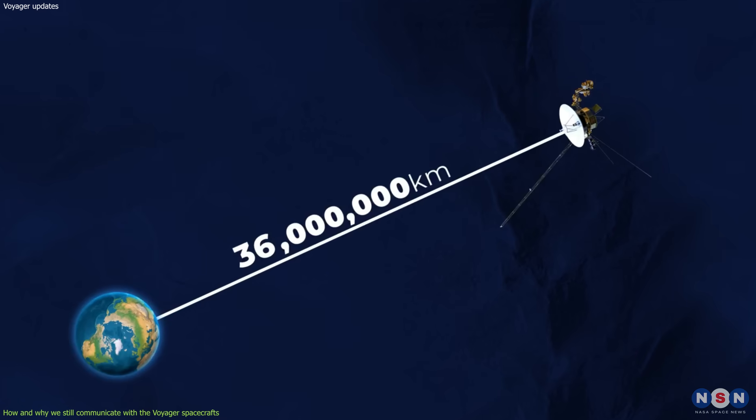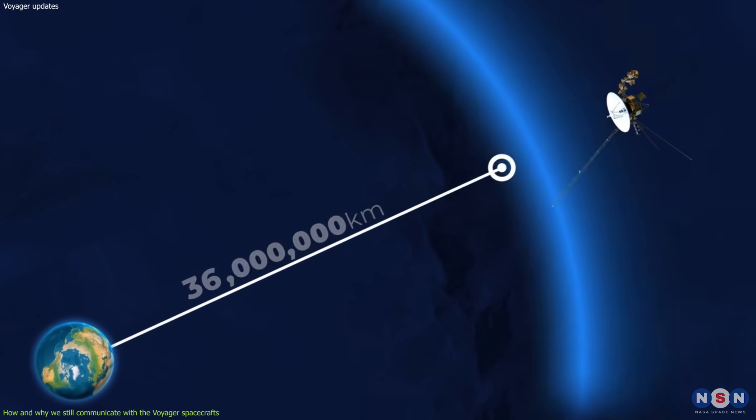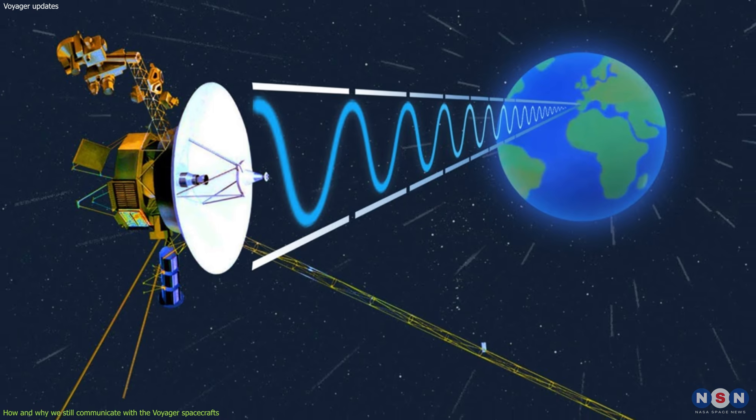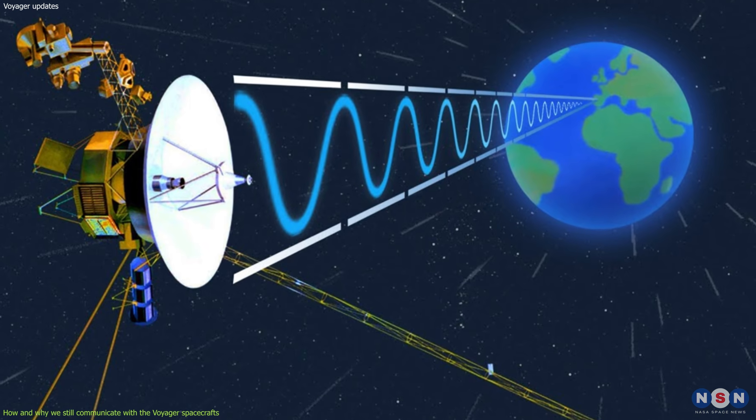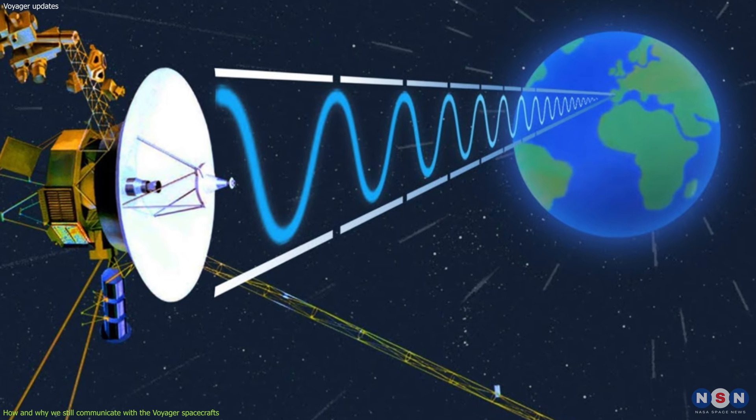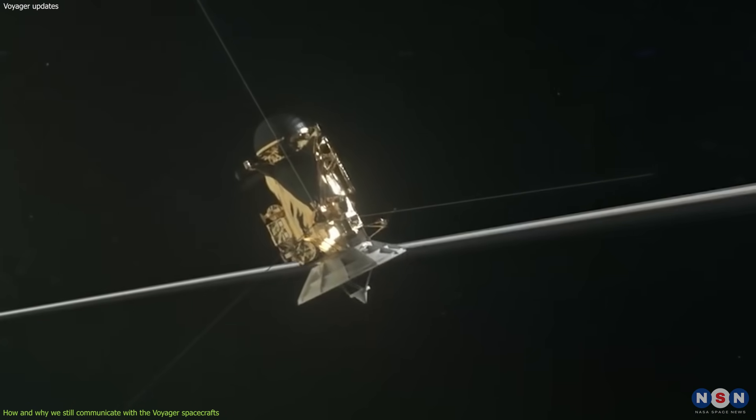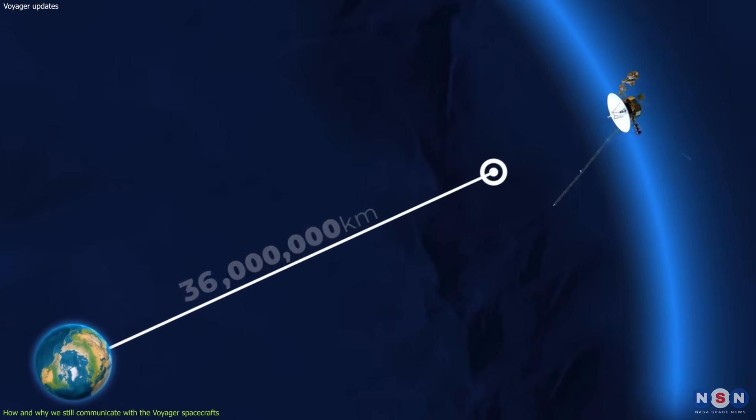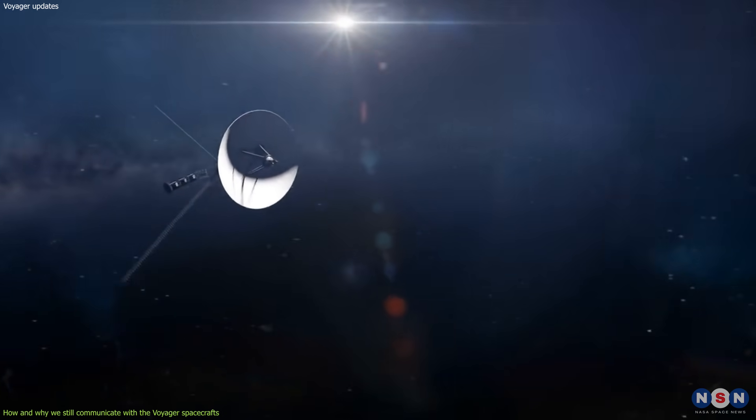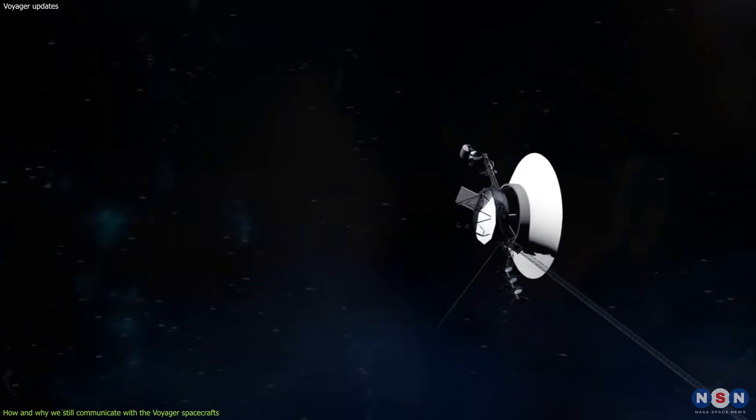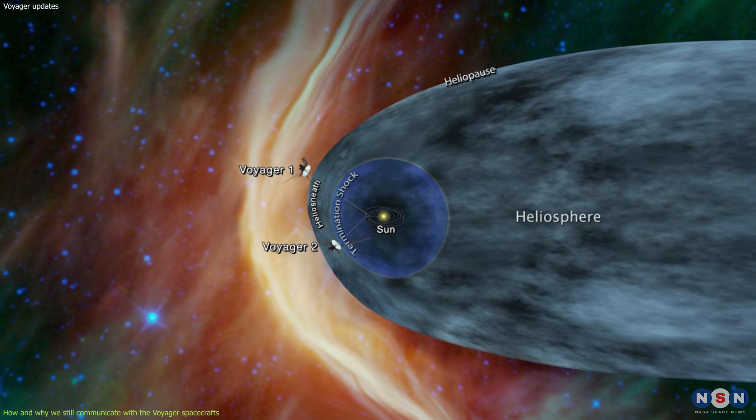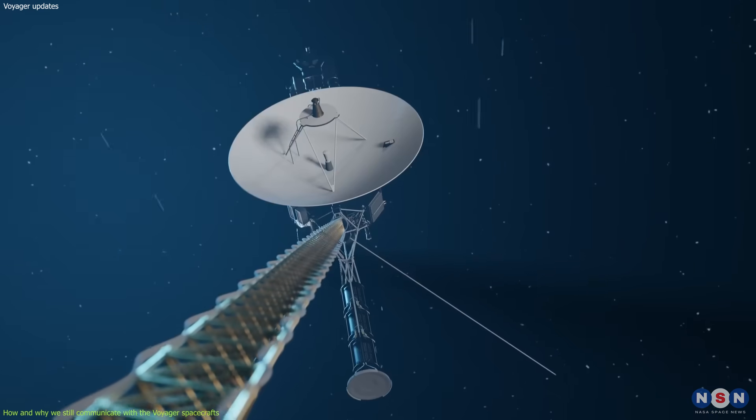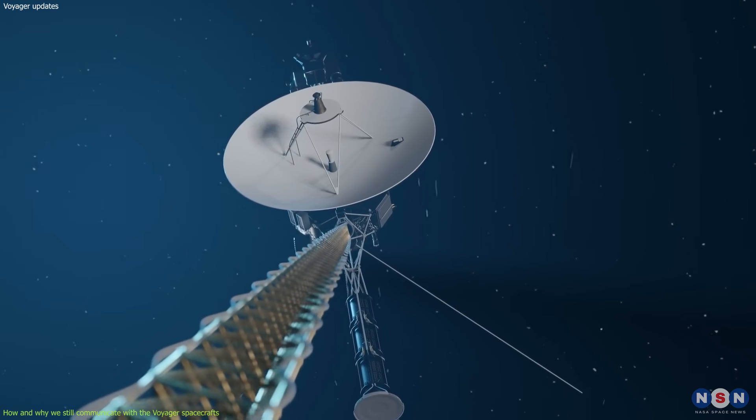The signals they send and receive are very weak and take a long time to travel. For example, it takes about 21 hours for a signal from Voyager 1 to reach Earth. But why do we need to keep communicating with them? It is important because they are still collecting valuable scientific information about the interstellar space, which is the region between the stars. They are also testing the limits of human engineering and exploration.